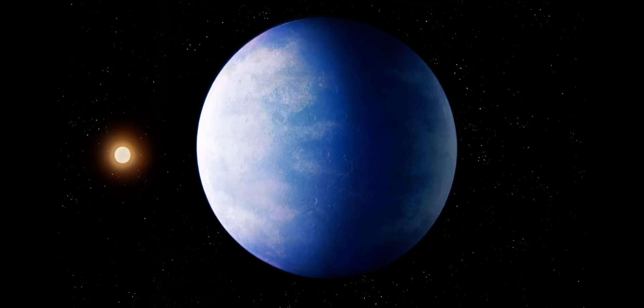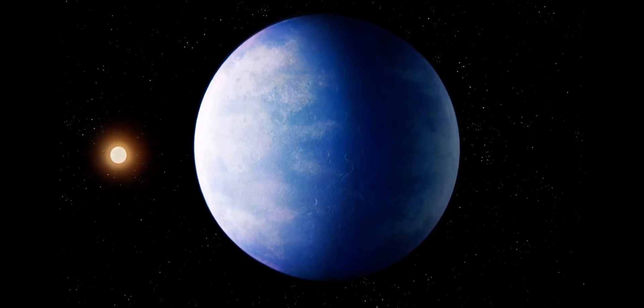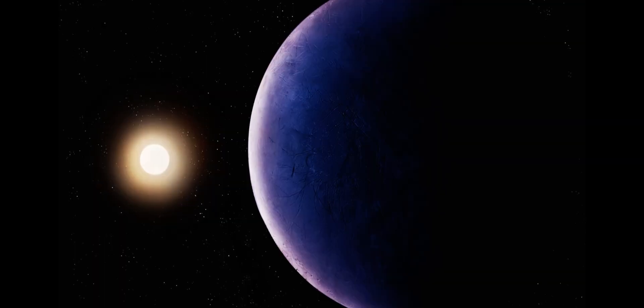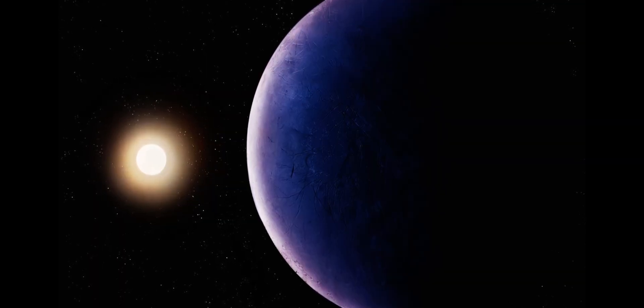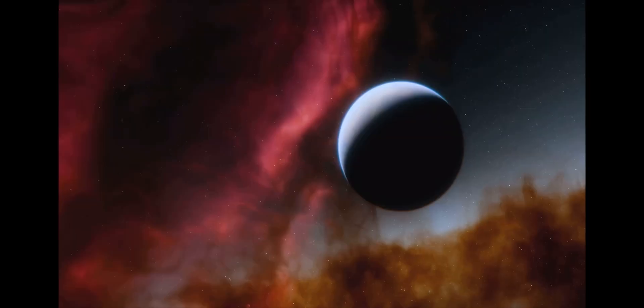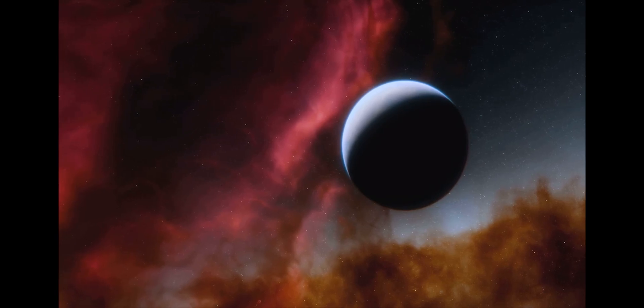Far beyond our solar system lies a planet that has captured our imagination. It's called Kepler-452b, and it's often referred to as Earth's bigger cousin. This intriguing world orbits a star much like our own sun, sparking dreams of finding another place we might call home.